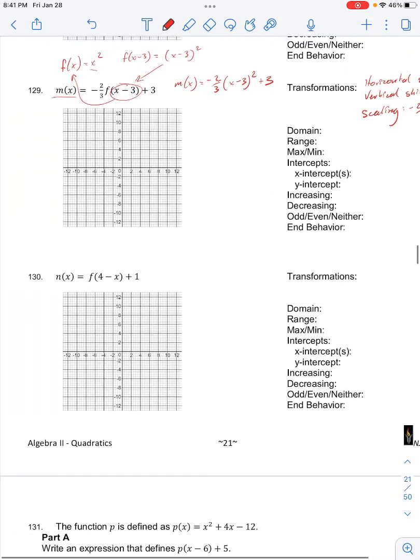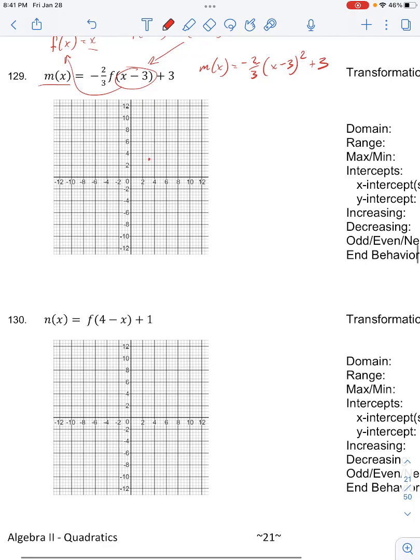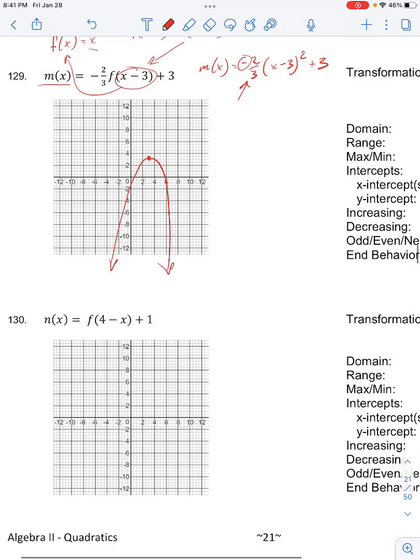Now we can sketch this, so we have our vertex at 3, 3, so right here. And it's scaled by 2 thirds, and opens downwards because of this negative. So our graph will look something like this. I'm not drawing it very exactly, but you get the point.